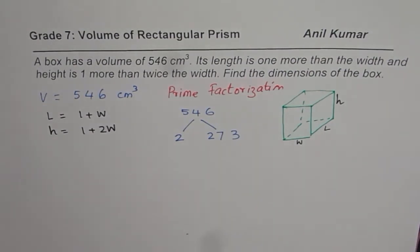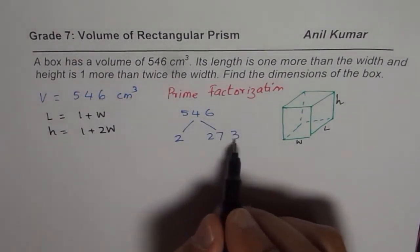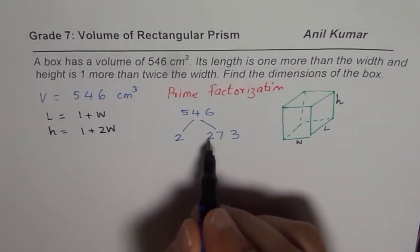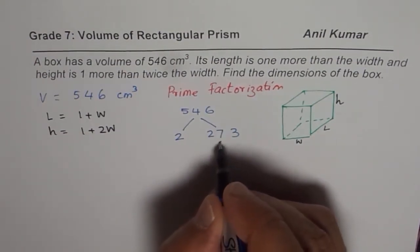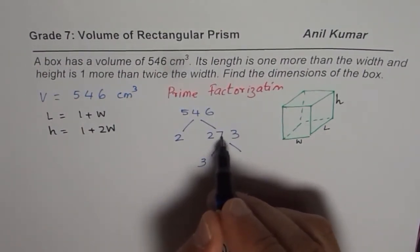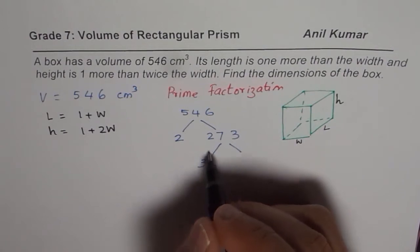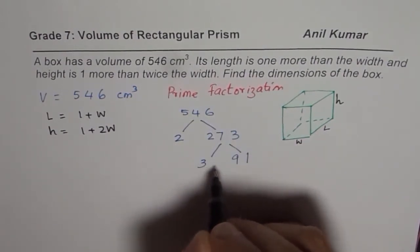Now 273 is a very difficult number. It looks like a prime number, but is it prime? No, it is not. If you add 2 and 7, you get 9. 9 plus 3 is 12. So it can be divided by 3. So let's try it out. So we'll divide by 3. 3 times 91 is 273, so we get 91.